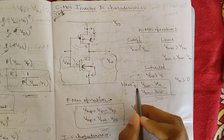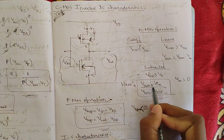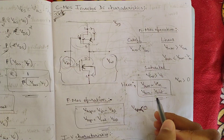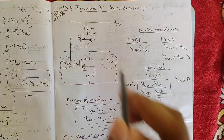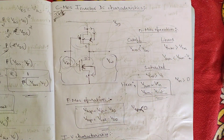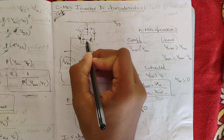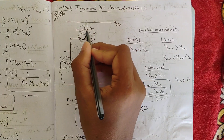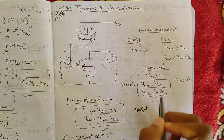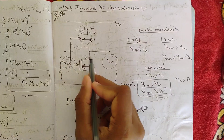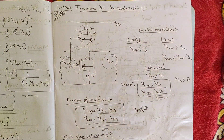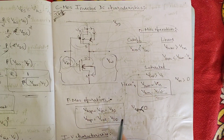We derive key relations: VGSN = VIN and VDSN = VOUT for the NMOS transistor, since the gate-to-source voltage equals VIN and the drain terminal is tied to VOUT. For the PMOS transistor, VGSP = VIN − VDD and VDSP = VOUT − VDD, where VTP < 0.